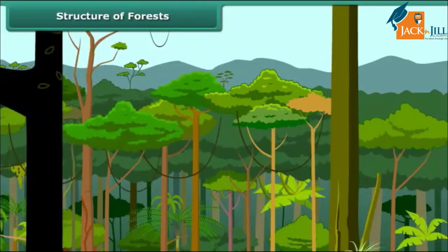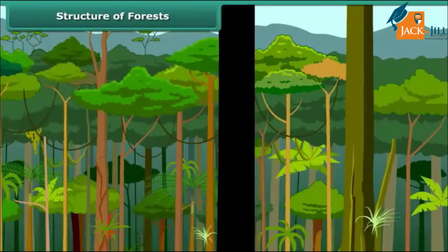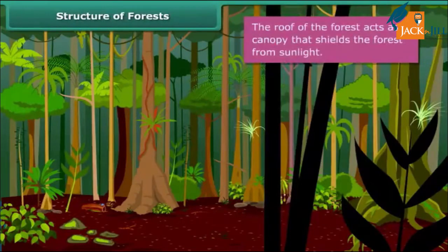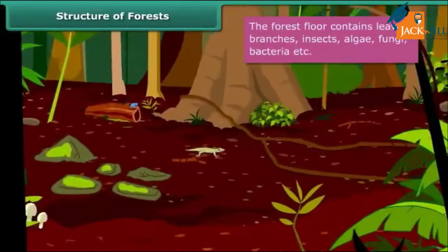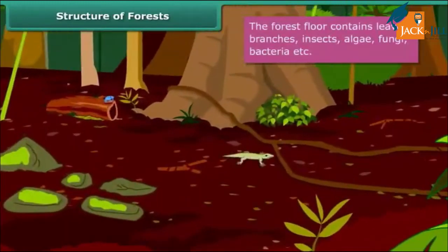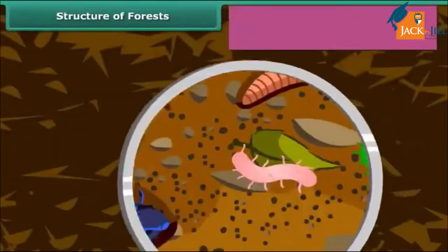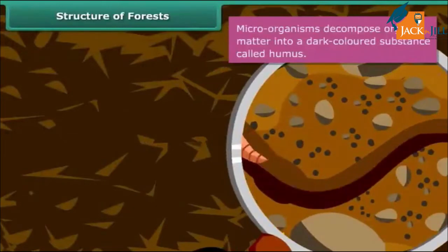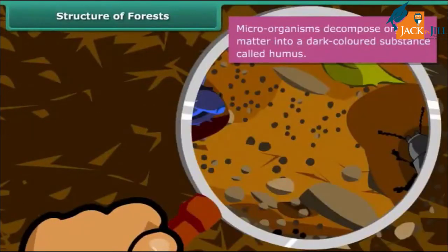The crowns of the tall trees form the roof of a forest. The roof acts as a canopy that shields the forest from sunlight. The forest floor is hot and humid. It contains leaves, branches, insects, algae and microorganisms like fungi, bacteria, etc., that are invisible to the naked eye.